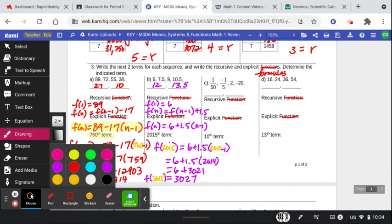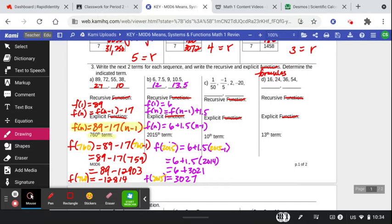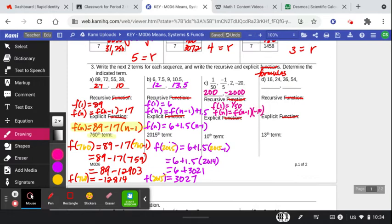I'm going to go pink this time. So negative 20 times a negative 10, that's going to give us positive 200. Positive 200 times a negative 10. We're basically just adding a zero each time, right? And then the alternating sign, positive, negative, positive, negative. Let's go write the recursive. f of 1 equals 1/50. f of n equals f of n minus 1 times negative 10.